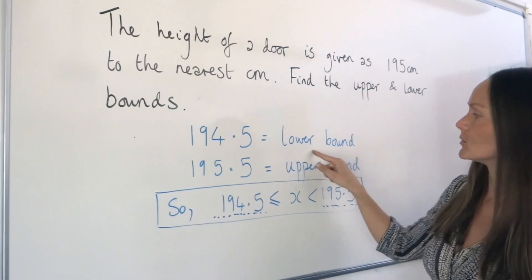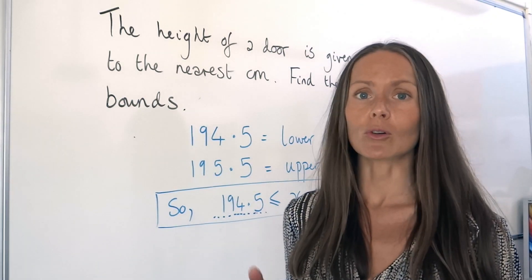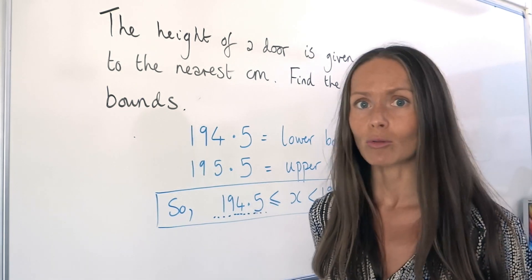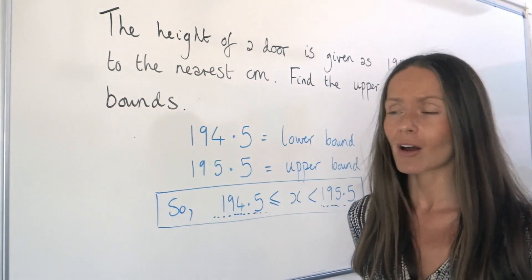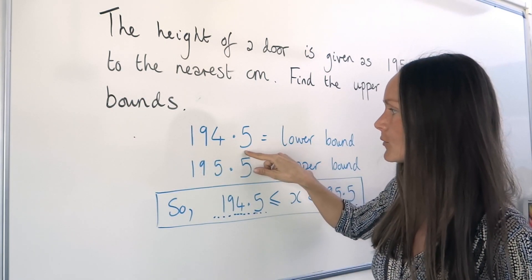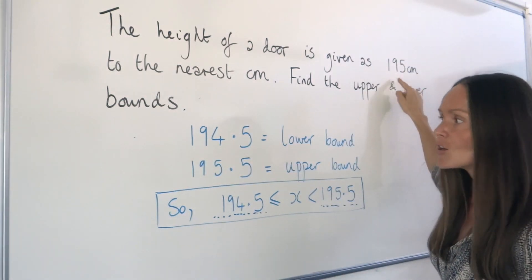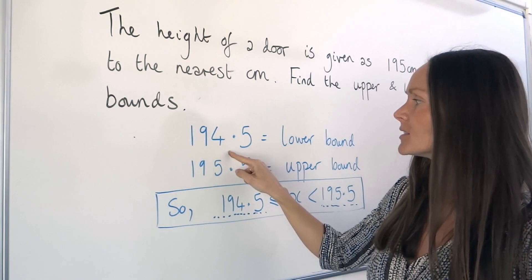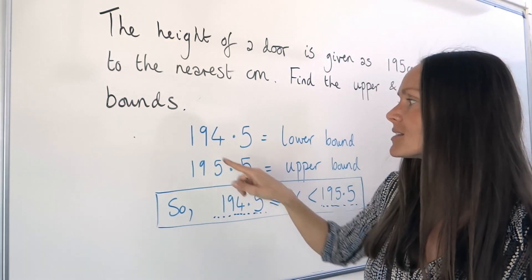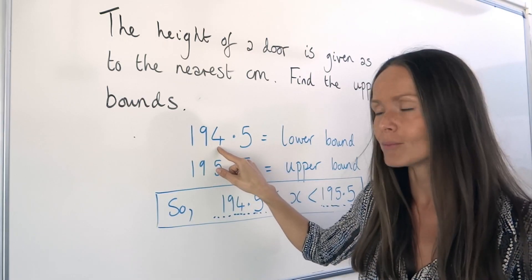The lower bound is the smallest possible measurement the height of the door could have been, so that when we round it to the nearest centimetre — the nearest whole number — it would be 195. You can see that when we round 194.5 to the nearest centimetre, that 5 rounds the 4 up to a 5, giving us 195. So that is the lower bound. Anything smaller than that number wouldn't round up to 195 — for example, 194.4: the 4 wouldn't round that 4 up to a 5.